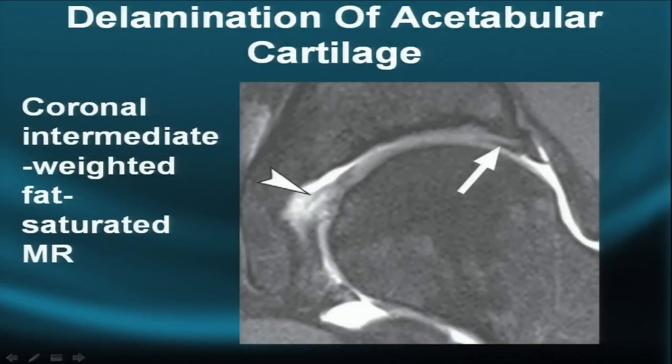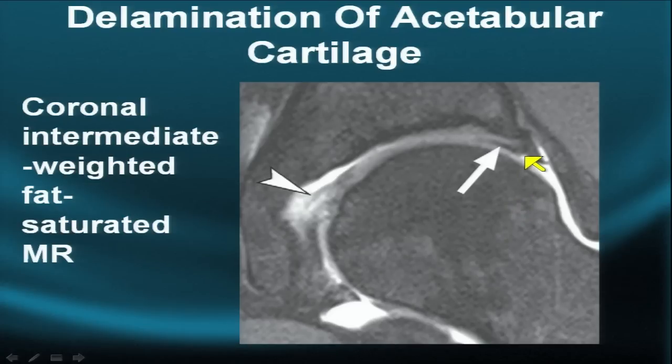Welcome to the Pomerantz mentor series. Today's vignette will continue the summation of MR of the hip with some anatomic variations. We begin with a coronal intermediate water-weighted sequence with fat suppression, giving us an arthrographic effect and showing the superior and inferior labrum, with a little fraying of the ligamentum teres.